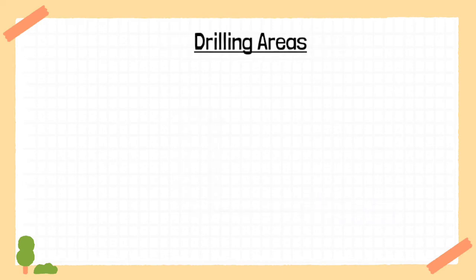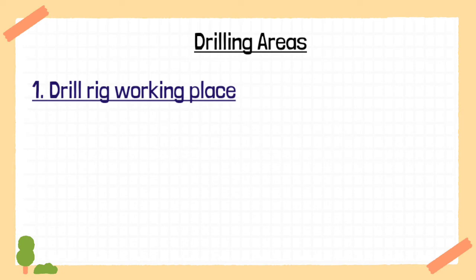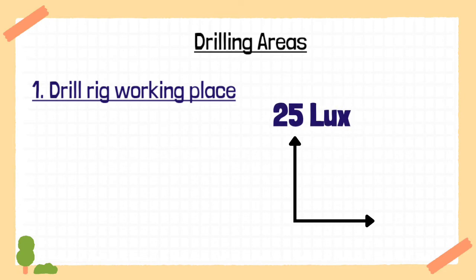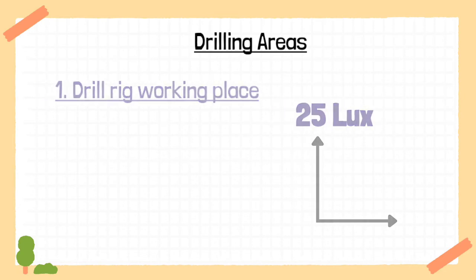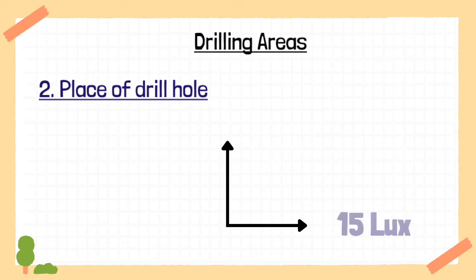Now let us look into the drilling area. In the area where the drill rig works, we should have a value of 25 lux when measured in vertical direction. And in the area where the drill hole exists, we should have 15 lux in horizontal direction.